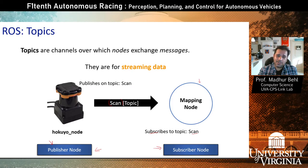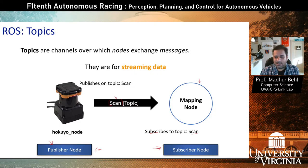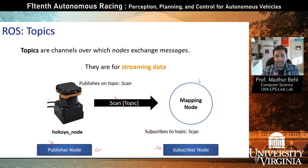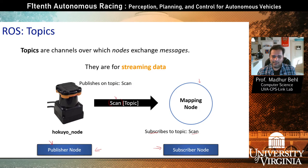A publisher streams its data or messages on a dedicated topic — you can name that topic anything you want. Many subscribers can subscribe to the same topic and each receives a copy of every message. The subscriber is interrupted with a callback for every new message received. This is not the only way to exchange messages — there is also something called services, which we'll cover later.